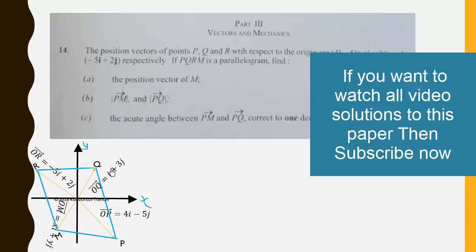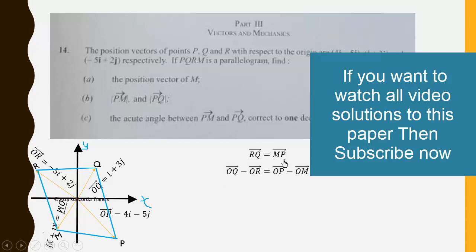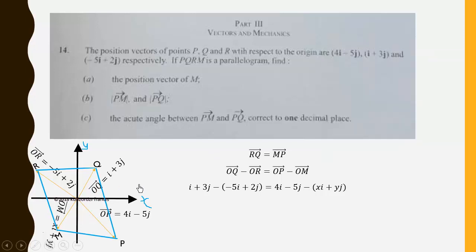We use the properties of the parallelogram to determine position vector OM. Since opposite sides are equal and parallel, vector PQ equals vector MR, and similarly vector RM equals vector QP. This gives us: OQ − OR = OP − OM. We know OQ, OP, and OR already, so we substitute them into this equation and solve for xi + yj, which is the position vector we chose for M.